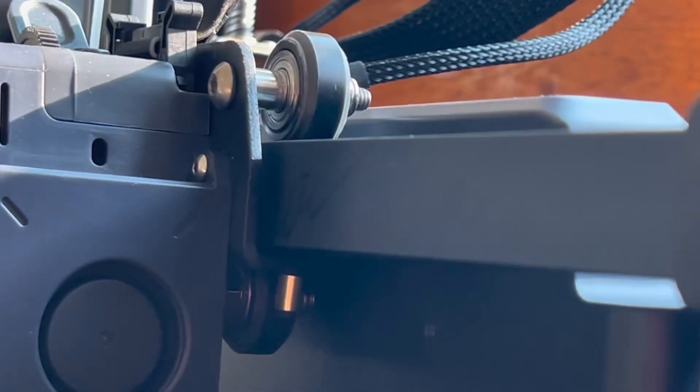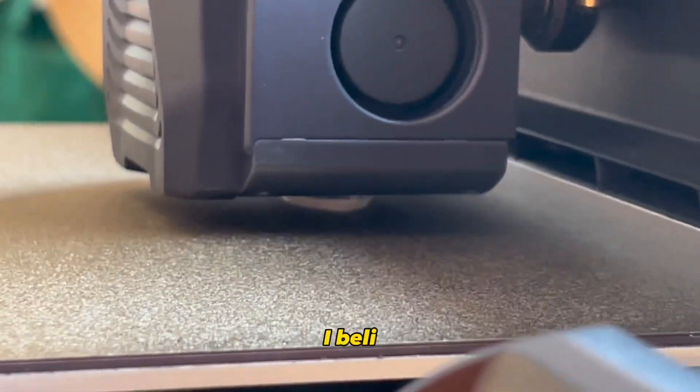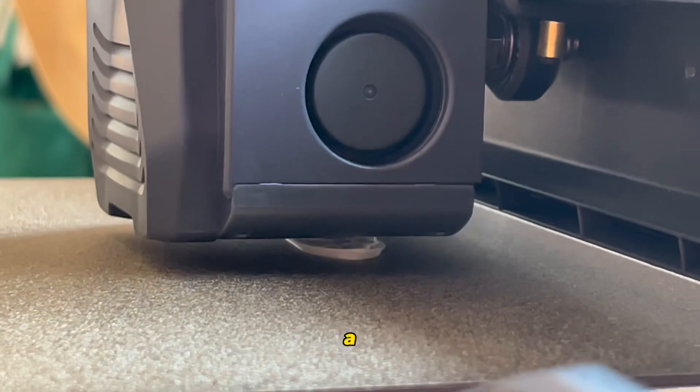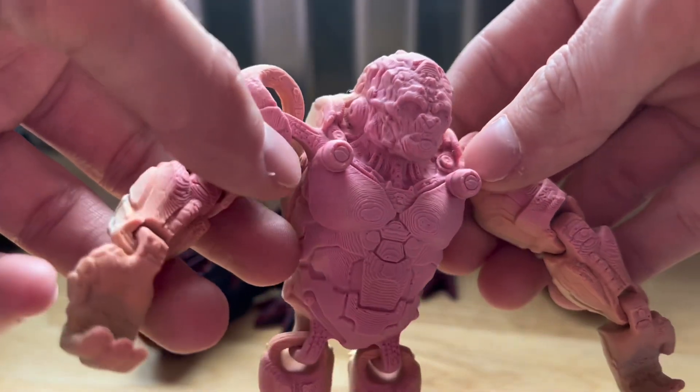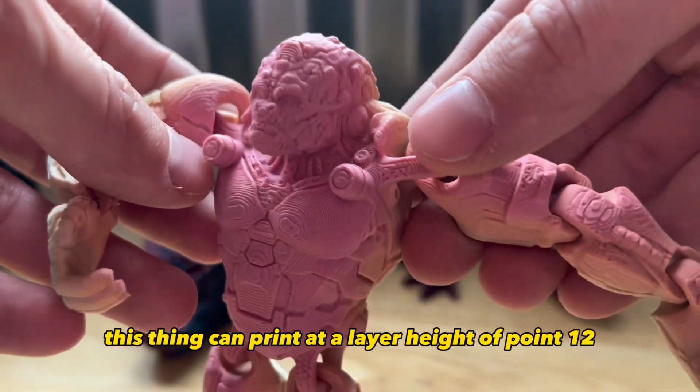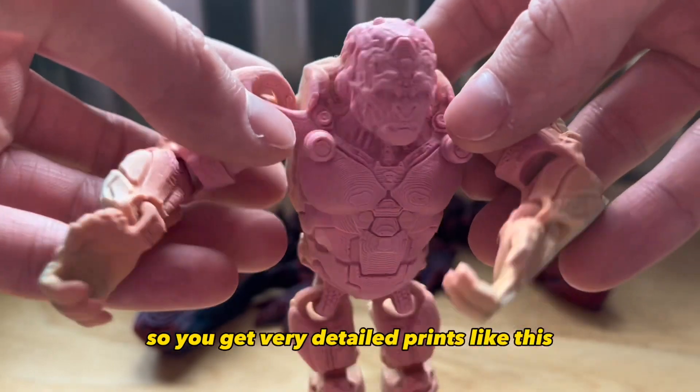Another cool thing is if you peek there, I have my machine signed by Mandic, I believe that's how you pronounce it, and that was how I actually got this early. Now let's take a look at print quality. This thing can print at a layer height of 0.12, which is very impressive, so you get very detailed prints like this Optimus Primal. Look at all those details.